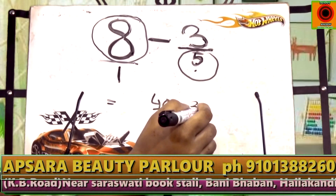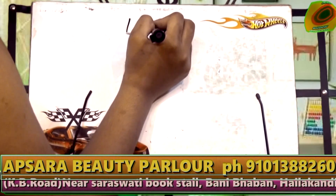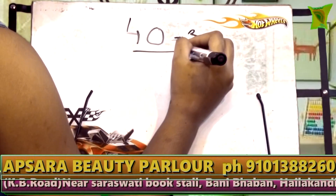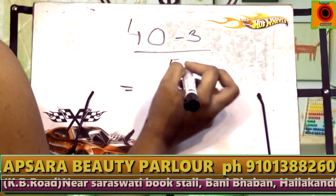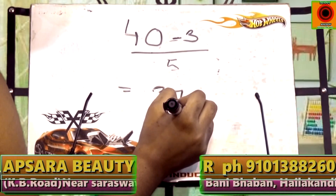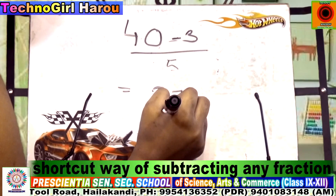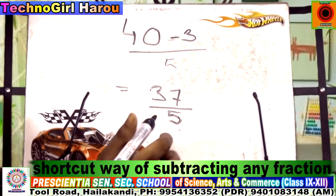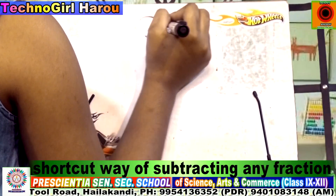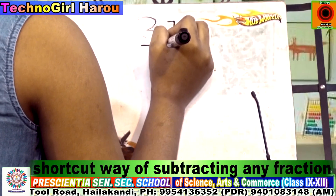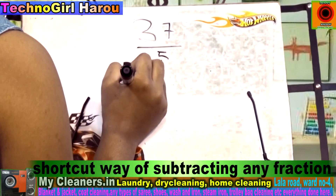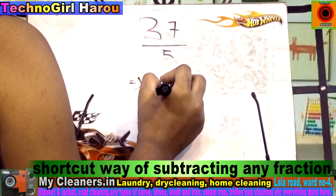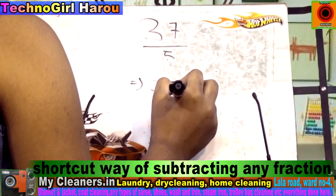That is 3. So now 40 minus 3 by 5 is 37 by 5. 37 by 5 can also be written as 7 and 2 by 5.